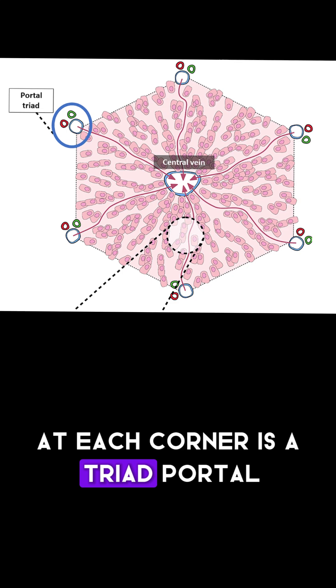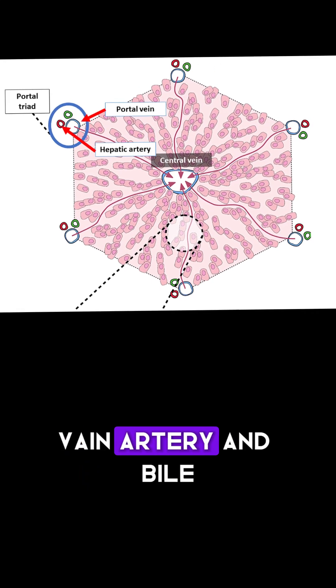At each corner is a triad: portal vein, artery and bile.